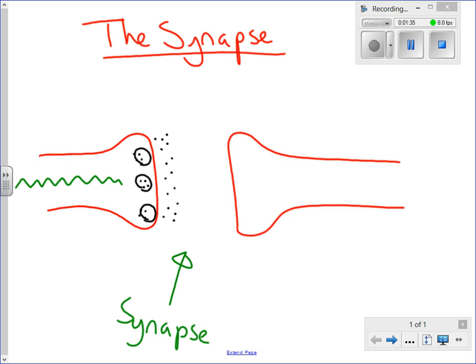Those chemicals then move across to the other neuron. That movement is called diffusion. The chemicals diffuse across the synapse to the next neuron. And this neuron could be either the motor neuron or the relay neuron.